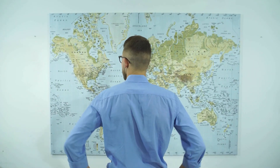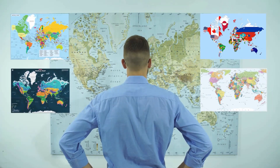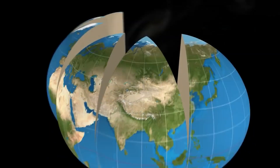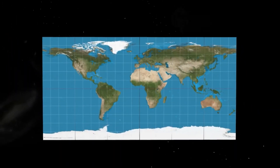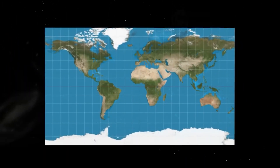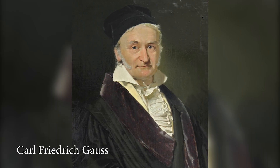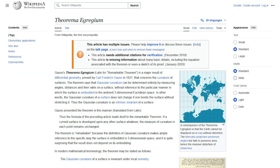Why does this happen? Does this mean all world maps are wrong? Short answer: yes. But it's not just the map you're looking at — every single world map you've ever seen is wrong, at least to some degree. The reason is simple: you can't flatten the surface of a sphere onto a plane without causing some distortion. This fact was proven by German mathematician Carl Friedrich Gauss in 1827 through his Theorema Egregium.